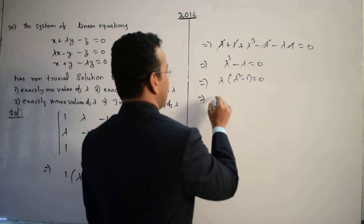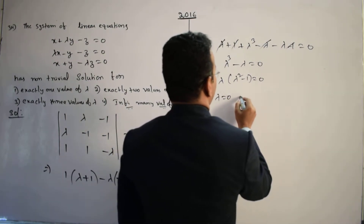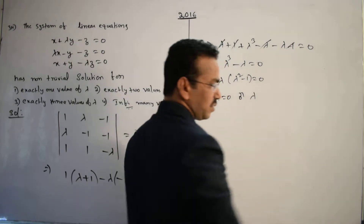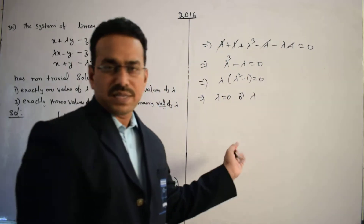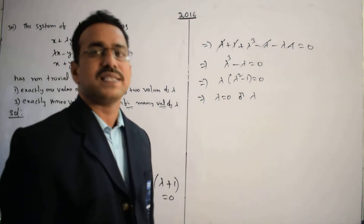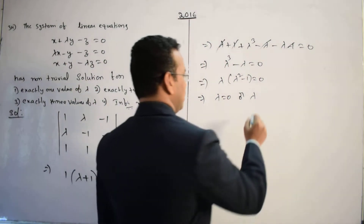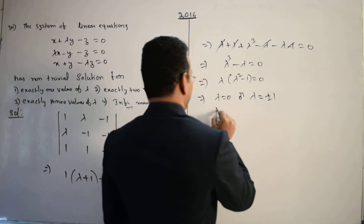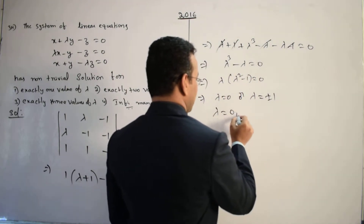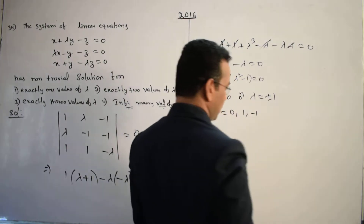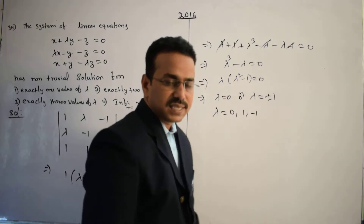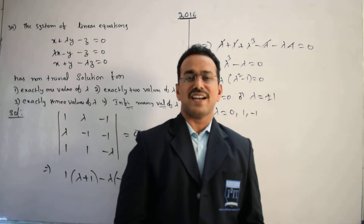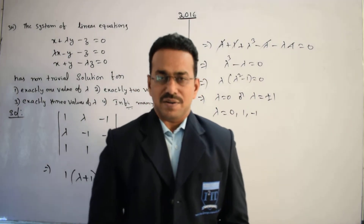This implies λ(λ² - 1) = 0, so λ = 0 or λ² - 1 = 0, giving λ = ±1. Therefore, for the three values λ = 0, +1, -1, the given system of homogeneous equations possesses a non-trivial solution.